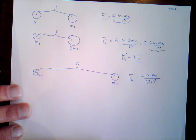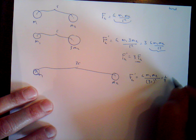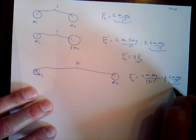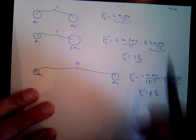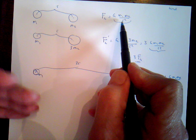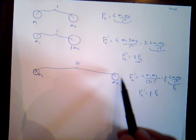Let's simplify: (3r) squared means 3 squared is 9, and r squared is r squared. So this equals one-ninth times g times m1 times m2 over r squared. Here again is the original force fg. So the new force fg prime equals one-ninth of the original force. That makes sense because r is in the denominator and it's squared — that's an inverse-square relationship. So if you triple the distance, you square that: 3 squared is 9, then invert it, giving you one-ninth of the original force.